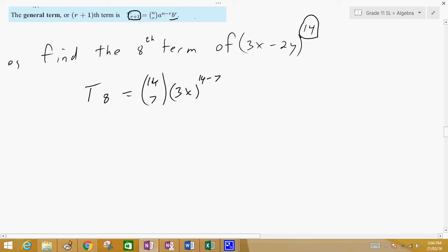And then b to the power of r, b is negative 2y, don't forget your negative, negative 2y to the power of r, and r was 7.